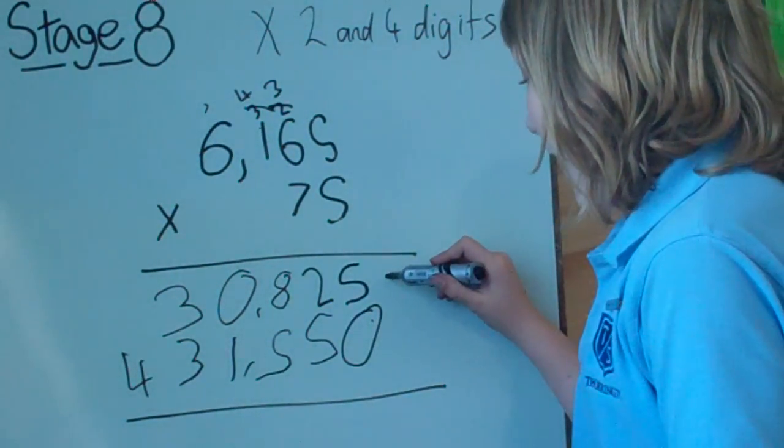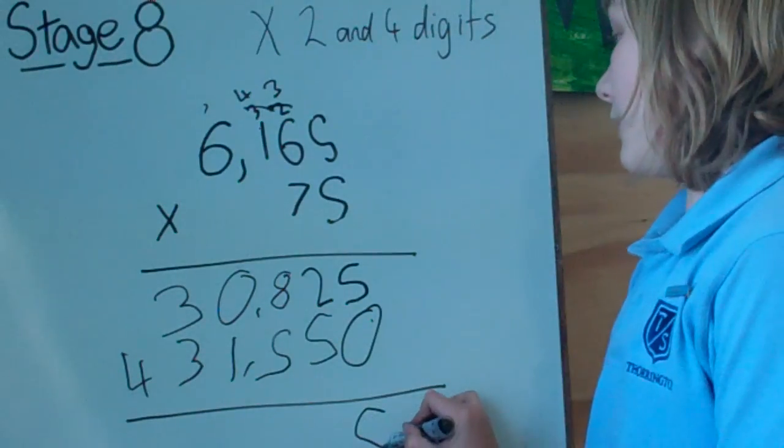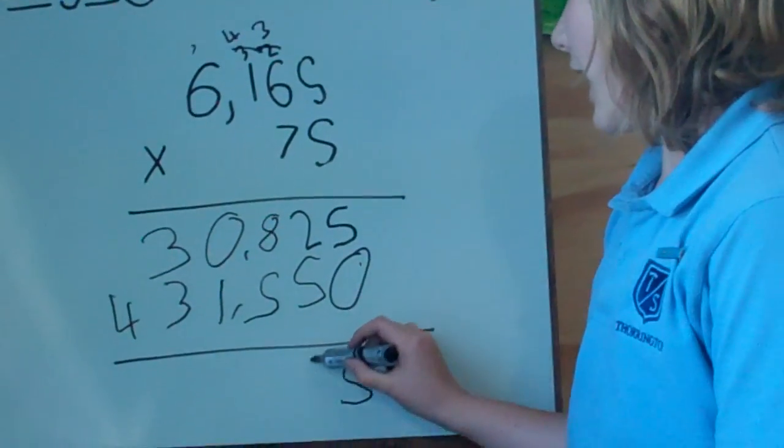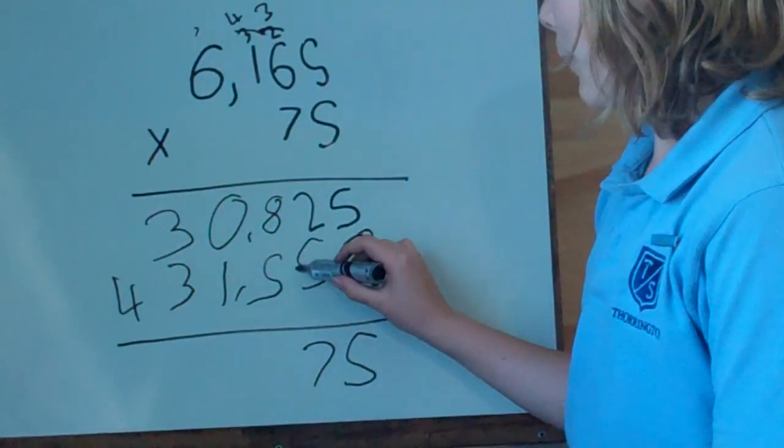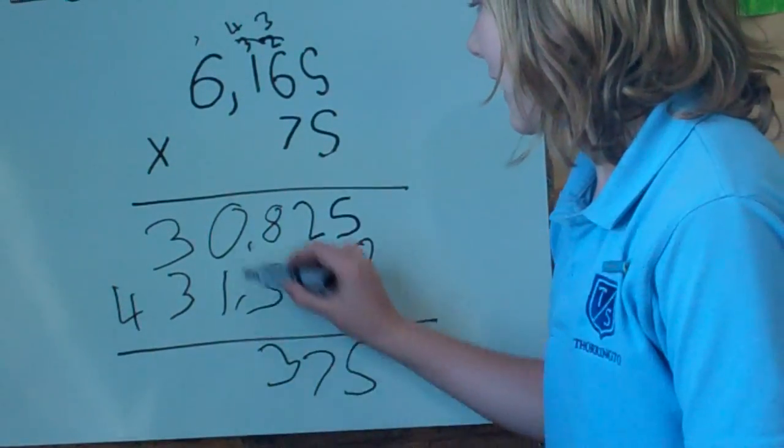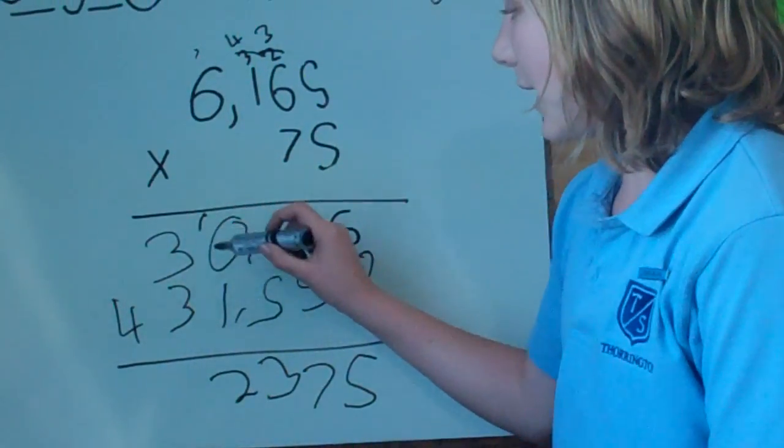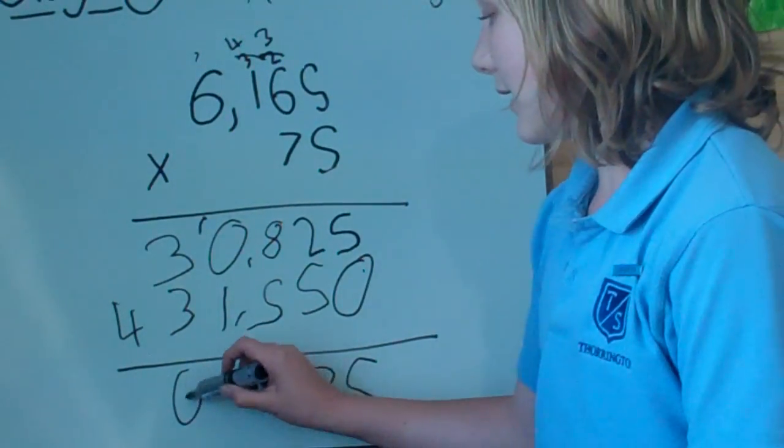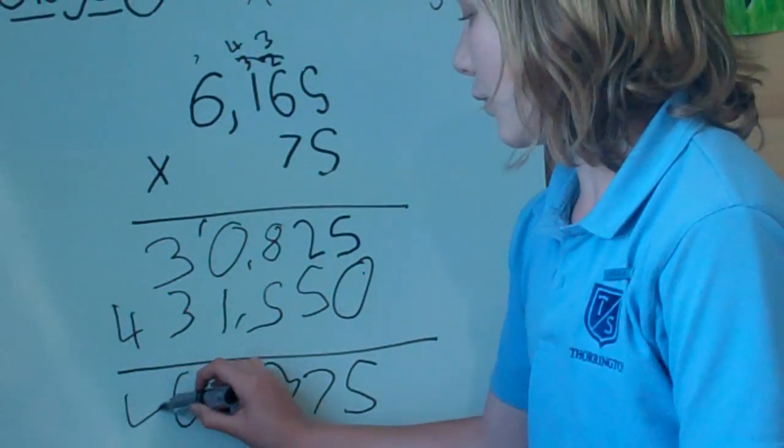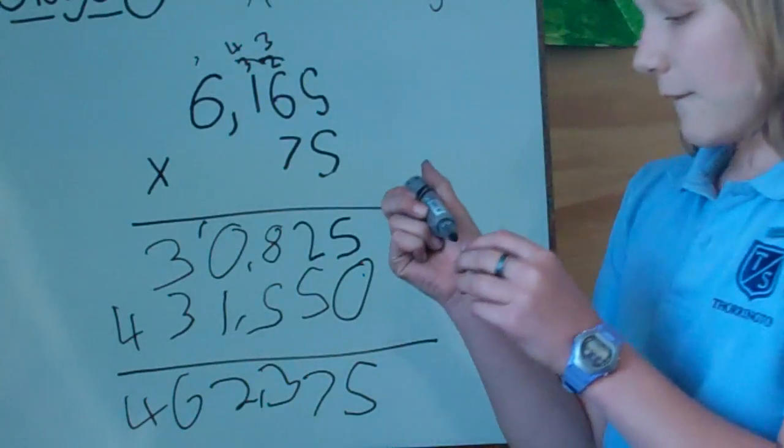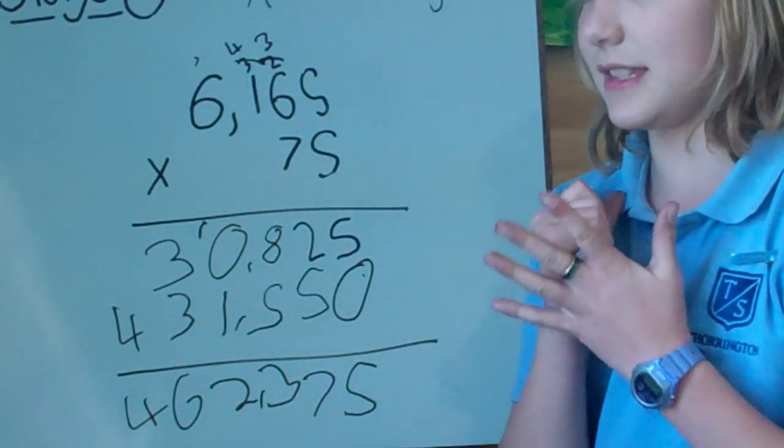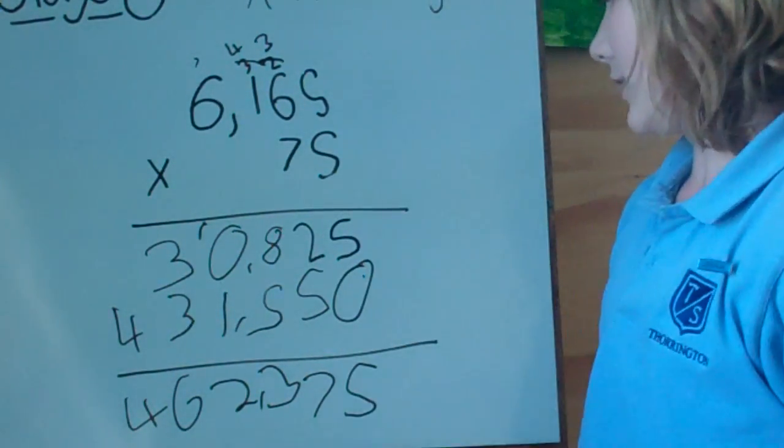Now to add them up. 5 plus nothing is 5, 2 plus 5 is 7, 8 plus 5 is 13, carry the 1. 1 plus 1 is 2, 3 plus 3 is 6, and 4 plus nothing is 4. So your answer is 462,375.